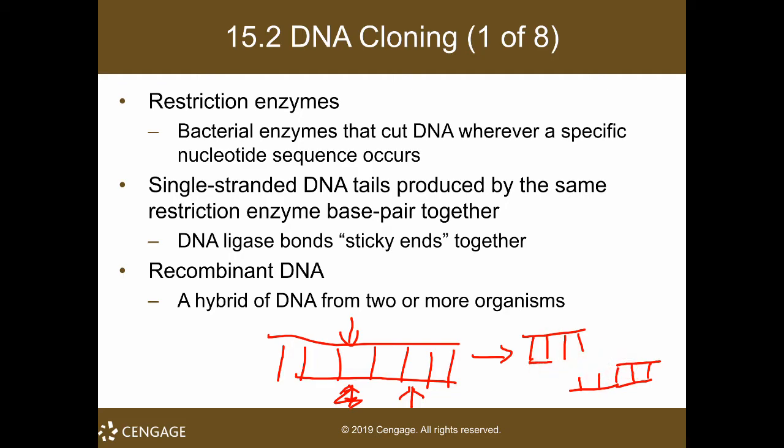In order to produce sticky ends that will stick to one another, you need to cut them with the same restriction enzyme. You cannot cut gene A with restriction enzyme 1 and gene B with restriction enzyme 2 — they won't stick together. The sticky ends are only sticky to the ends that are cut with the same restriction enzyme. When you have DNA from two different organisms joined together by cutting and sticking them up, you will form a recombinant DNA.